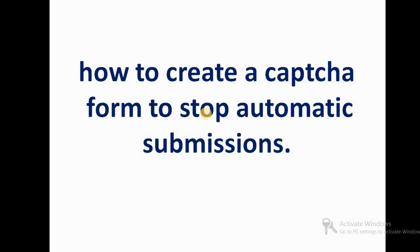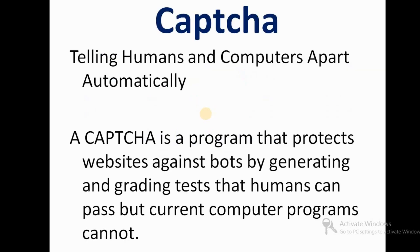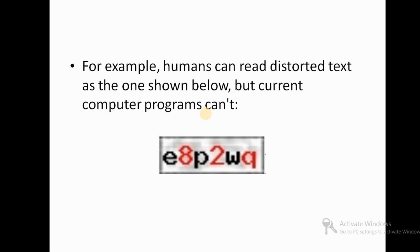First, let's see what is meant by CAPTCHA. CAPTCHA is a program that tells humans and computers apart. It protects a website against bots by generating tests that humans can pass but current computer programs cannot.